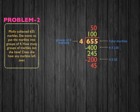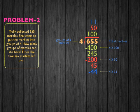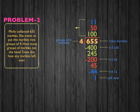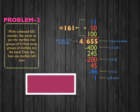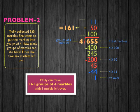Now, how many groups of four can go into 45? Well, 11. Because 11 times 4 equals 44. So 45 minus 44 equals 1. One is the total marbles left over from 655. To find how many groups we can make, we add the groups on top: 100 plus 50 plus 11, which gives us a total of 161. Molly can make 161 groups of four marbles with one marble left over.